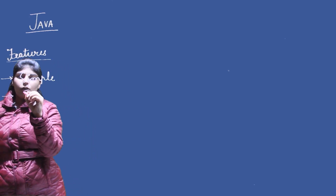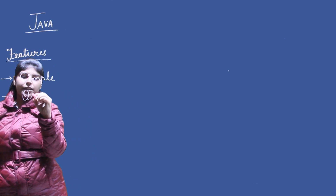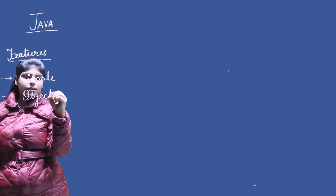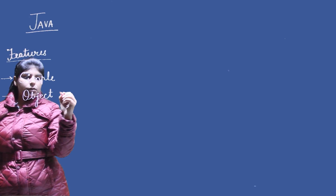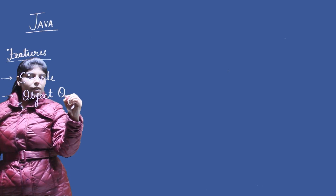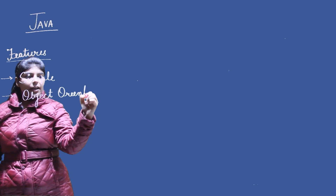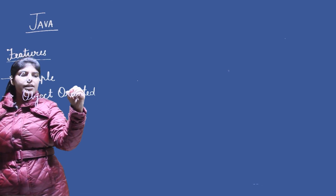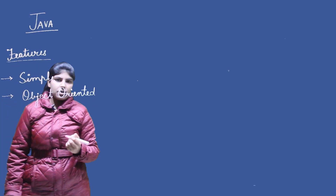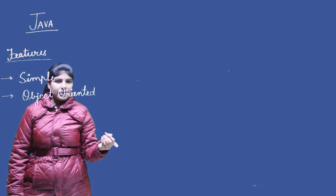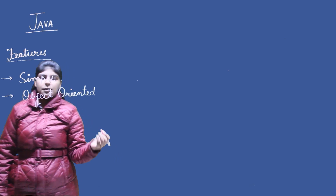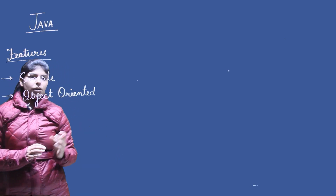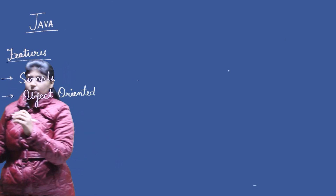Next is object-oriented. Java is an object-oriented language, which means that everything in Java is written inside classes. We'll study object-oriented programming in detail later, but for now just understand that Java is an object-oriented programming language.